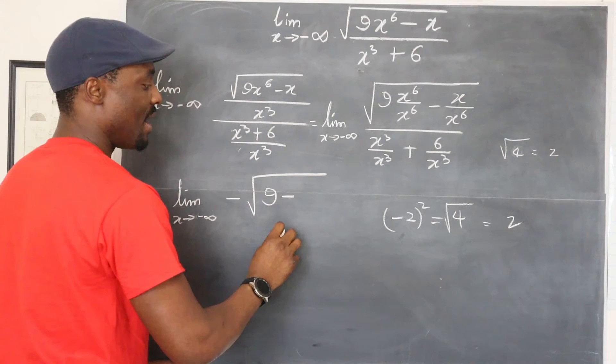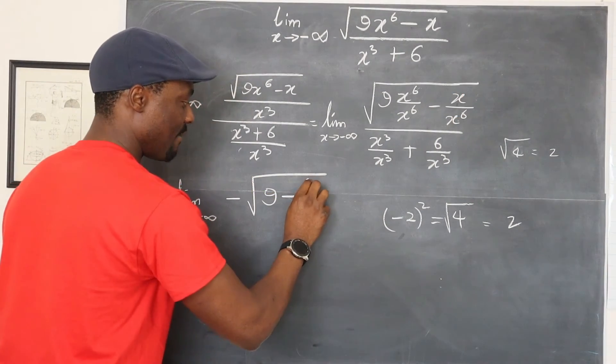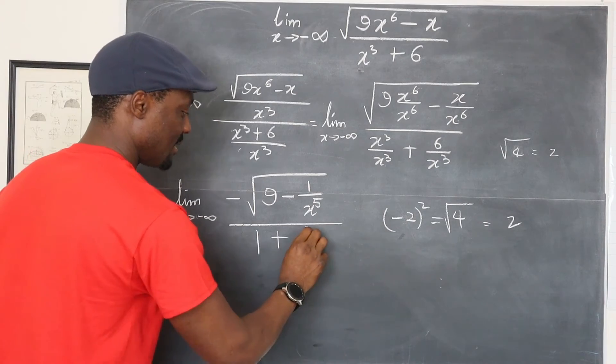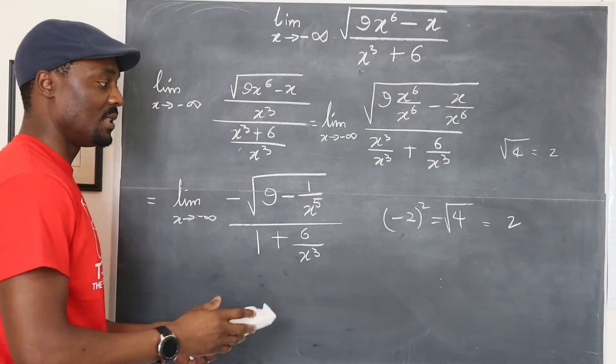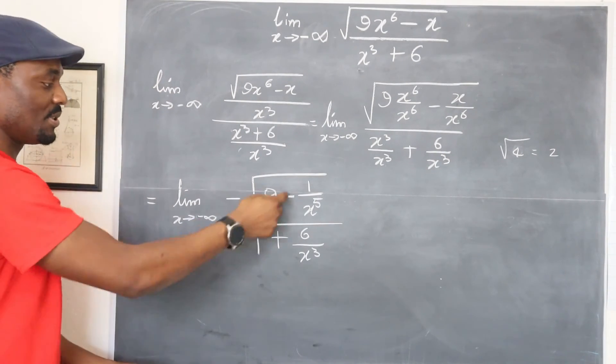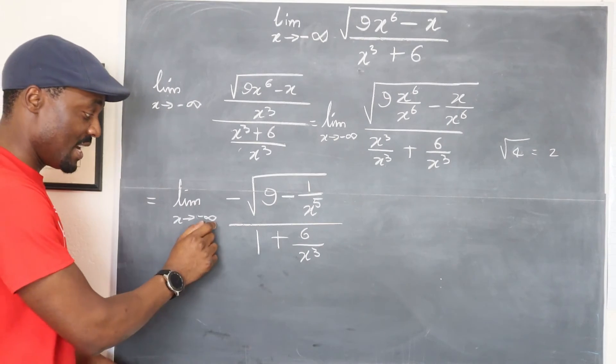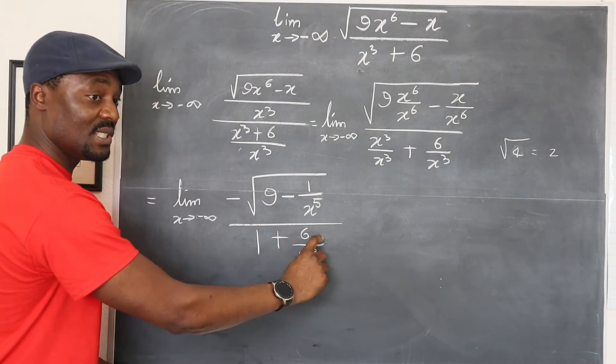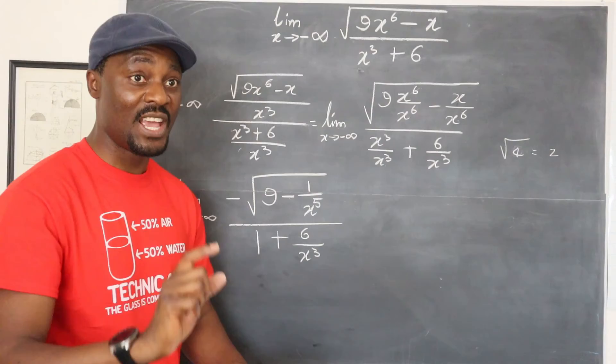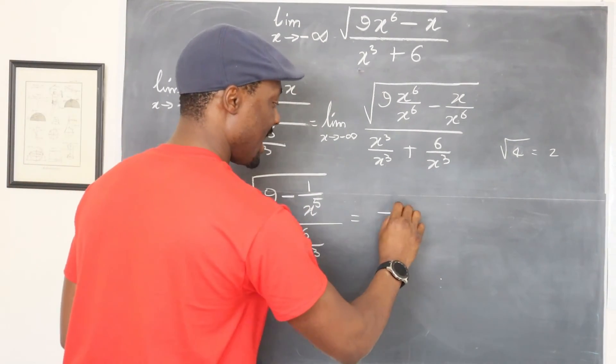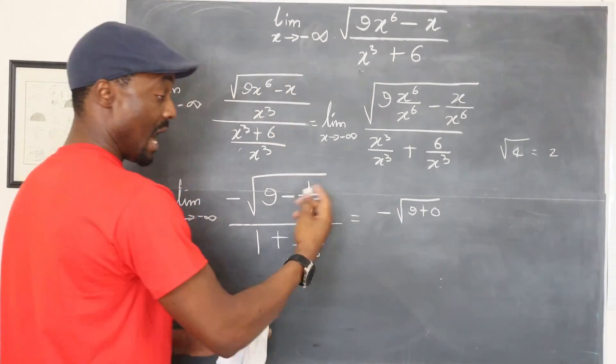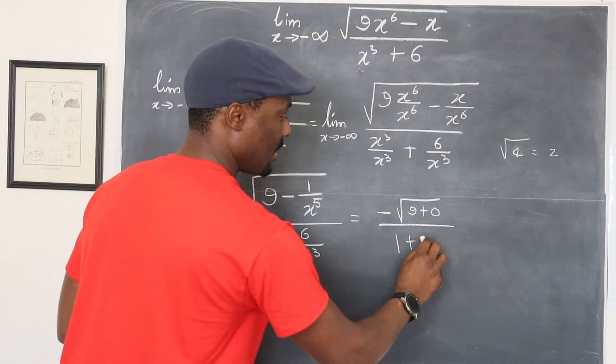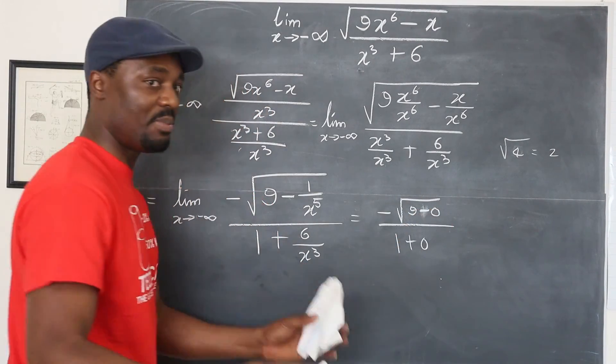So I'm going to write negative, then what's left, these two will cancel out, I'll have nine minus one over x to the fifth, divided by one plus six over x to the third. We're almost done. At this point you just need to substitute infinity in there. Some people will tell you you're putting negative infinity, so change this sign to positive, it doesn't make any difference because this is going to give you zero, this is going to be zero. Remember if you divide anything by infinity, your answer is zero. So put infinity here, you're going to end up with negative square root of nine plus zero or nine minus zero, whichever you choose, and then this will be one plus zero.